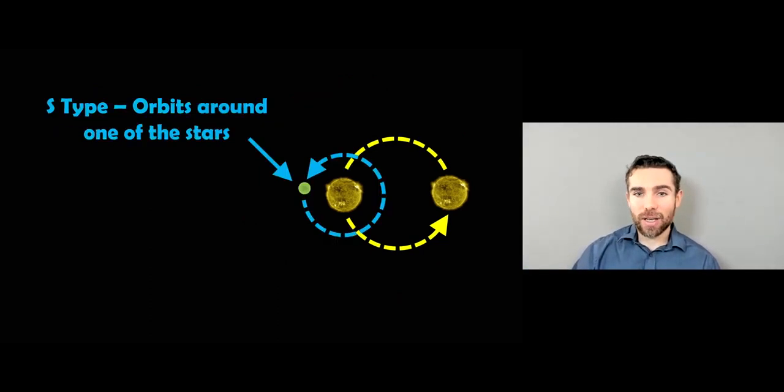There's also S-type. Now, S-type is where the planet orbits one of the stars, and then those two stars orbit each other. So this is a little bit more chaotic than the other one, because it's orbiting a star, and then those two stars then orbit each other as well.